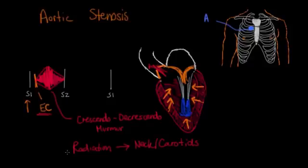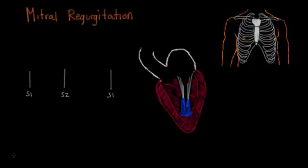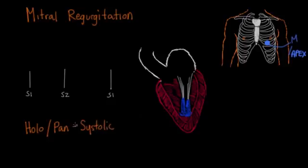So the next murmur that I want to talk about is mitral regurgitation. And remember, we're still on systolic murmurs. So mitral regurgitation is going to be best heard in the mitral area or apex. This murmur is actually what we call a holosystolic or a pansystolic murmur. And all that means is that it lasts throughout the entirety of systole.